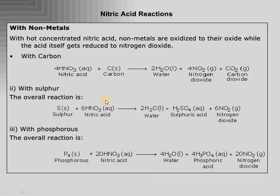Next, reactions with non-metals: carbon and sulfur are in the syllabus; phosphorus is also there. Carbon is oxidized because nitric acid acts as an oxidizing agent — carbon is oxidized to carbon dioxide. The gas produced is NO2 (nitrogen dioxide), which is reddish brown. Similarly, sulfur is NOT oxidized to sulfur dioxide — please remember this. Sulfur is oxidized to SO3, and SO3 reacts with water to form H2SO4 (sulfuric acid). So nitric acid is a very strong oxidizing agent: it oxidizes sulfur to sulfuric acid and carbon to carbon dioxide.